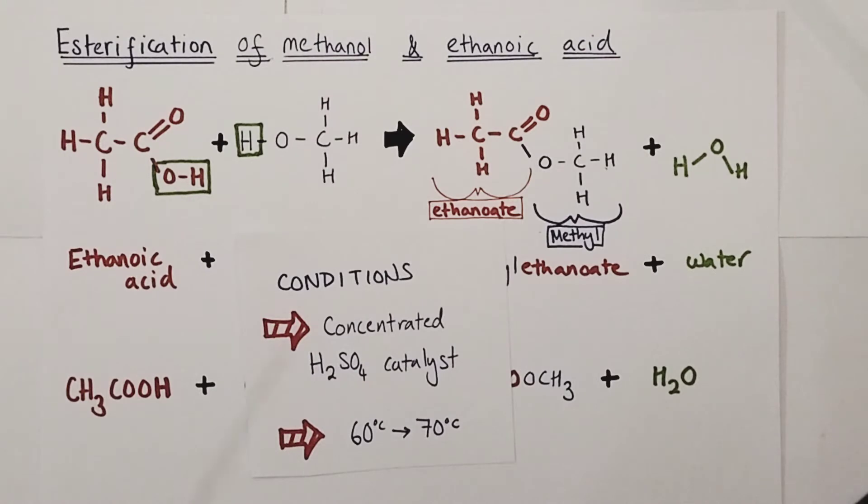What happens is the OH group from the ethanoic acid is lost and a hydrogen atom from the OH group of the methanol is also lost. And then the remaining part of the ethanoic acid bonds directly to the oxygen of the methanol to form our new molecule known as an ester.